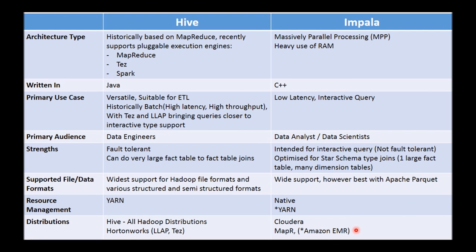This brings an interesting question: how do you compare interactive query performance between Hive using Tez and LLAP versus Cloudera's Impala? That can be tricky because no single distribution gives you both pre-installed, so you'll have to do your own benchmarking. I'm not particularly recommending one or the other — it's really about having these two choices available.